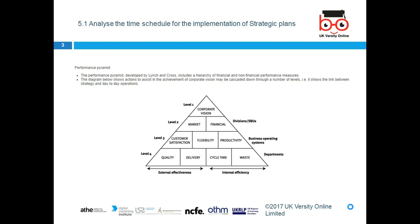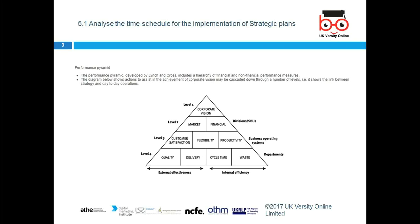At the business operating system level, we need to review, and at the departmental and operational levels, we need to look at quality — quality of product and quality of service both. We also look at delivery time, cycle time, internal efficiency, and waste elimination. All this we need to look at, and this Performance Pyramid can be used in implementation and the time schedule.